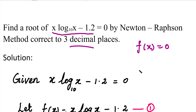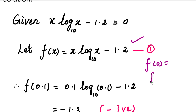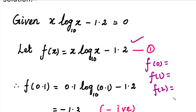We will assume f(x). So f(x) is x·log(x) - 1.2. We will write the function values. You have function values at 0 and 1. We will write the answers between these two values and the values of x.